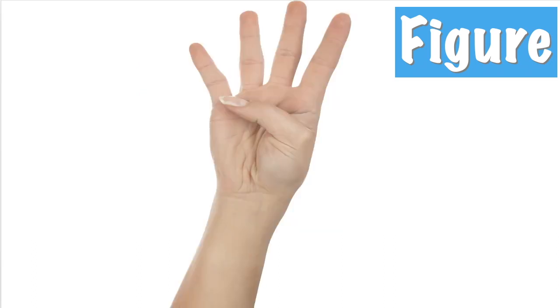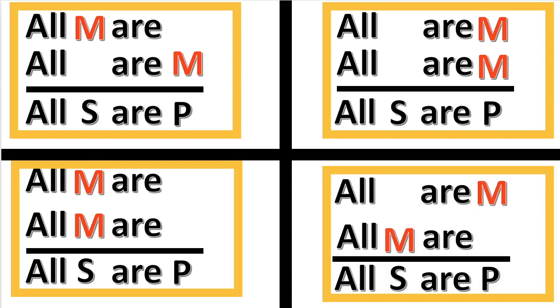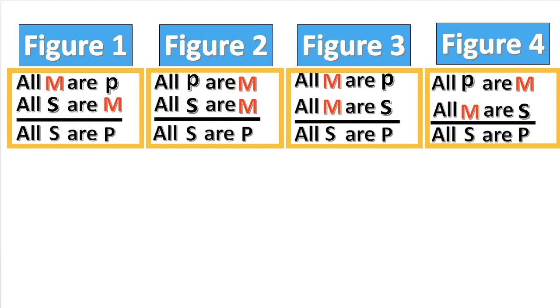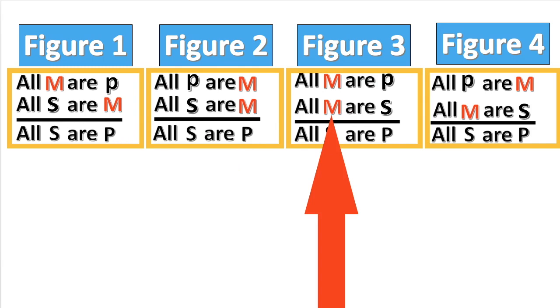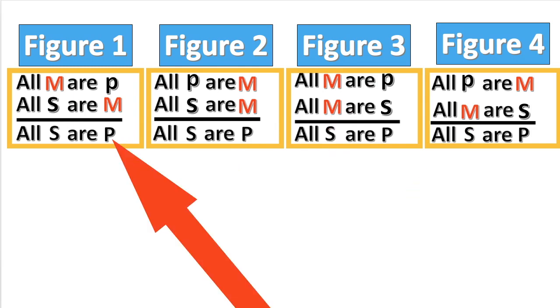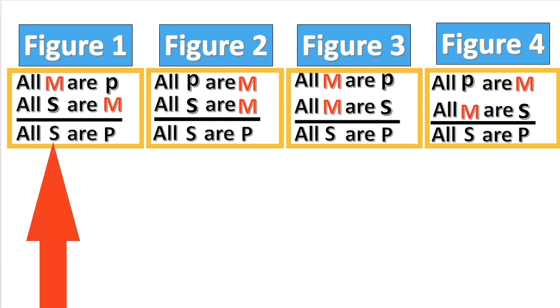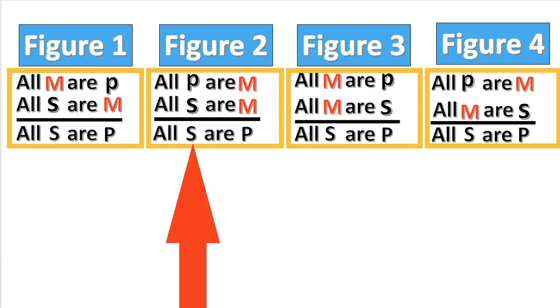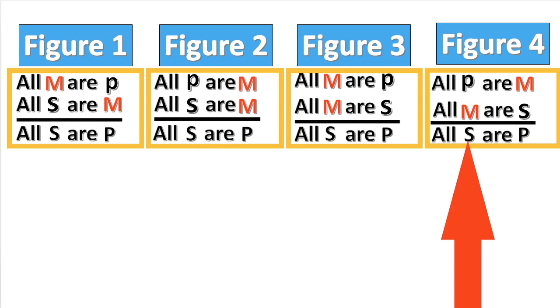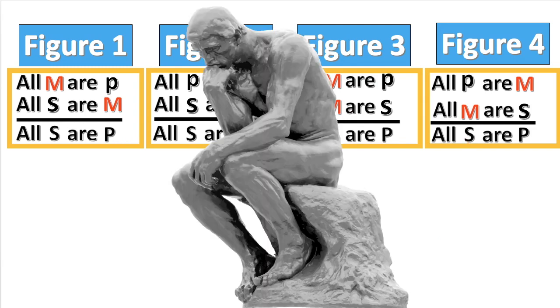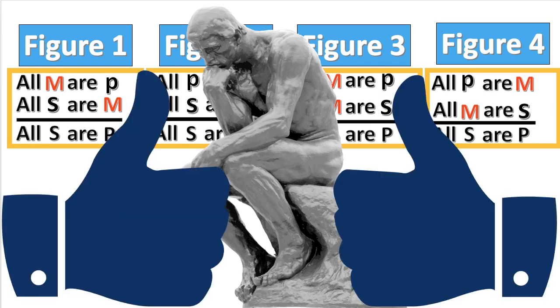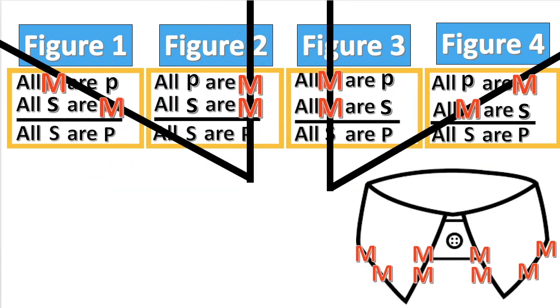The figure of the categorical syllogism is the order in which the middle term appears in the premises. There are only four possible orders in which the middle term can appear. The figures can be diagrammed with M representing the possible locations of the middle term, P representing the major term (which is the predicate of the conclusion), and S representing the minor term (which is the subject of the conclusion). If you can memorize the figures, it is helpful — one way is to imagine a shirt collar.